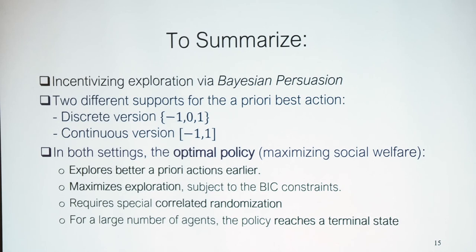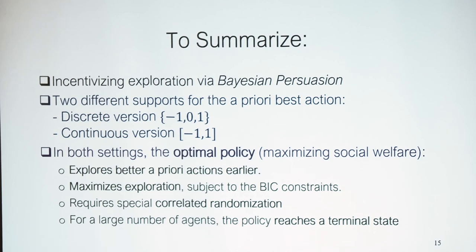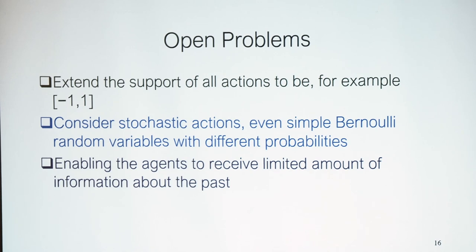To summarize, we've seen how to incentivize exploration via Bayesian persuasion. The full paper shows two different supports for the a priori best action: discrete and continuous. In both settings, the optimal policy explores better a priori actions earlier, maximizes the exploration rate independently, and requires correlated randomization. If we have enough agents, we guarantee reaching a terminal state where either an optimal reward has been found or all rewards are known.